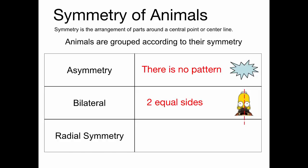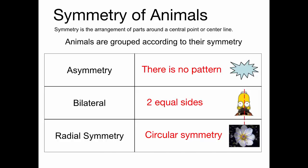The third type is called radial symmetry. Think of the radius of a circle — radial symmetry is circular symmetry. It's a pattern where parts are arranged around a circular pattern, like a flower has radial symmetry. With radial symmetry, you can draw several lines dividing it into equal parts.